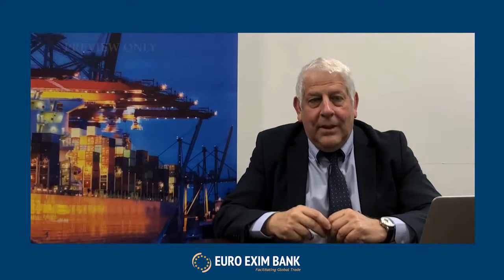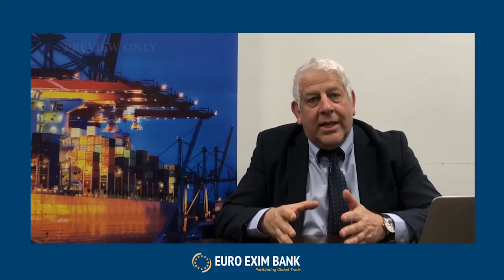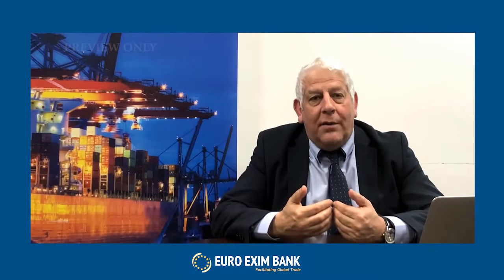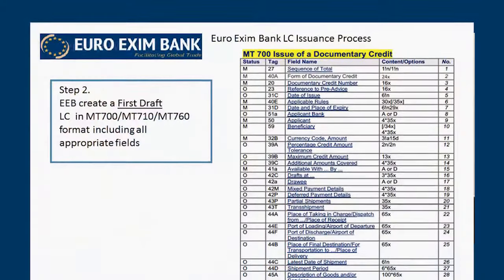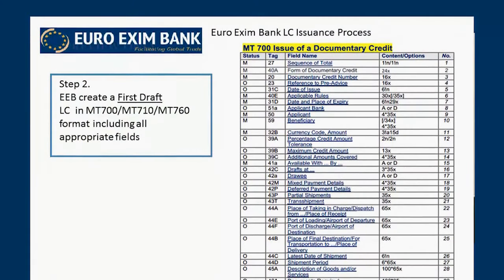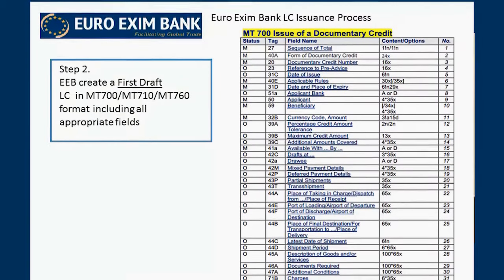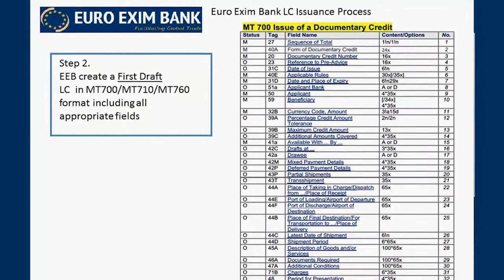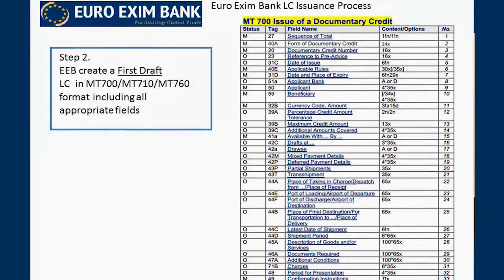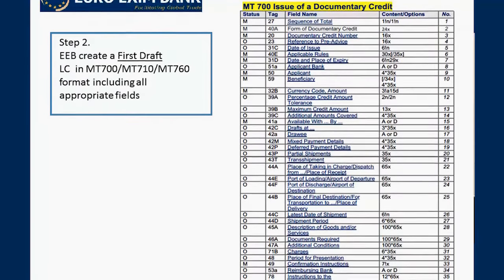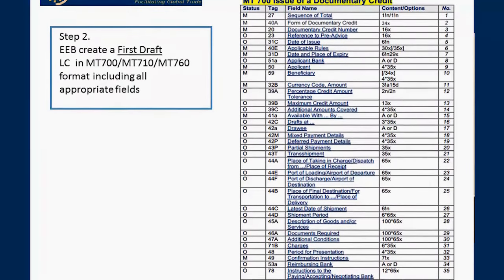The next part of the process is that Euro Exim Bank creates the first draft of the instrument. That involves gathering the information from the pro forma invoice and ensuring we follow SWIFT standards and syntax to create the correct instrument — whether that's a letter of credit (MT700), a third party letter of credit (MT710), or a standby letter of credit (MT760).